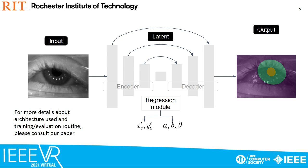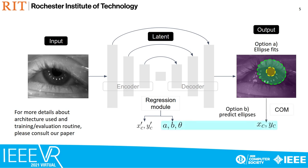The decoder predicts the LSEC proposed three-class output. For gaze estimation there are two outputs we can leverage: option A, we can fit pupil and iris ellipses to the edge pixels, or option B, we can directly extract ellipses from the network by circumventing the ellipse fitting operation. For option B, LSEC proposes leveraging the center of mass of the predicted segmentation maps to obtain center measurements, while extracting axes and orientation information from the regression module.